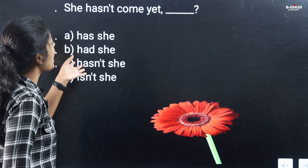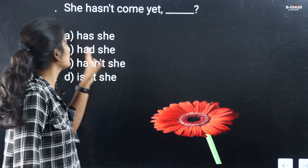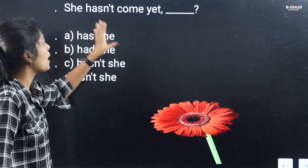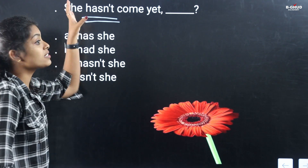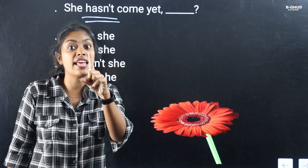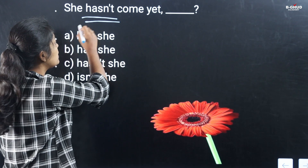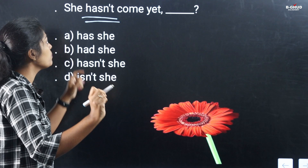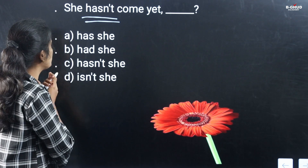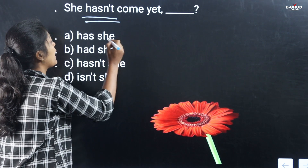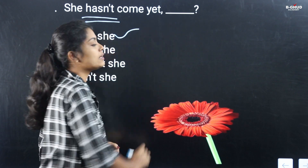Next example: 'She has not come yet.' 'Has not' is negative, so the question tag is positive. The question tag is 'has she?' — positive. So: 'She has not come yet, has she?'